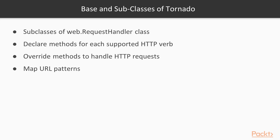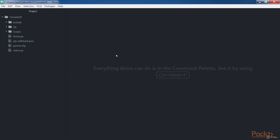We just need to create a subclass of this class and declare the methods for each supported HTTP verb. We have to override the methods to handle HTTP requests, then map the URL patterns to each subclass of web.RequestHandler in the web.Application instance that represents the Tornado web application. First we will create a HexacopterHandler class to handle requests for the hexacopter resource.